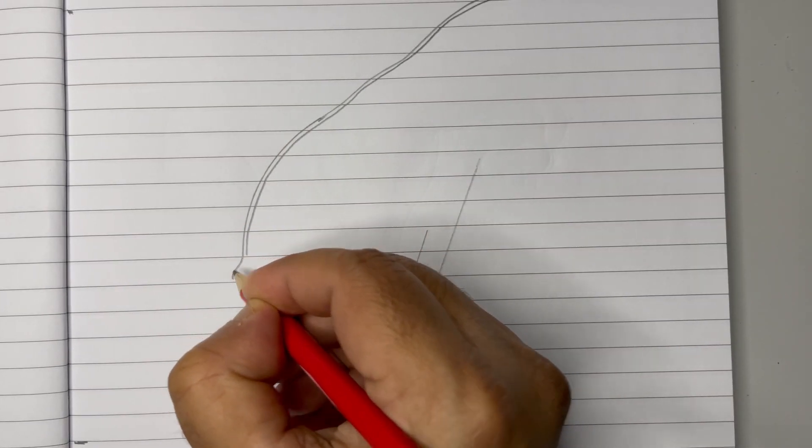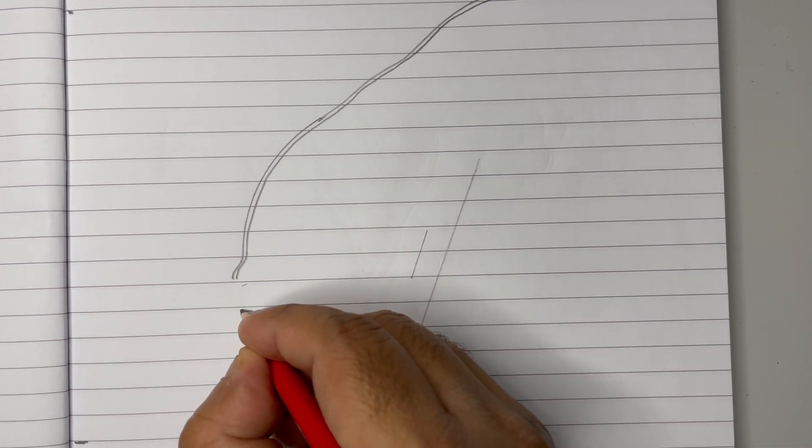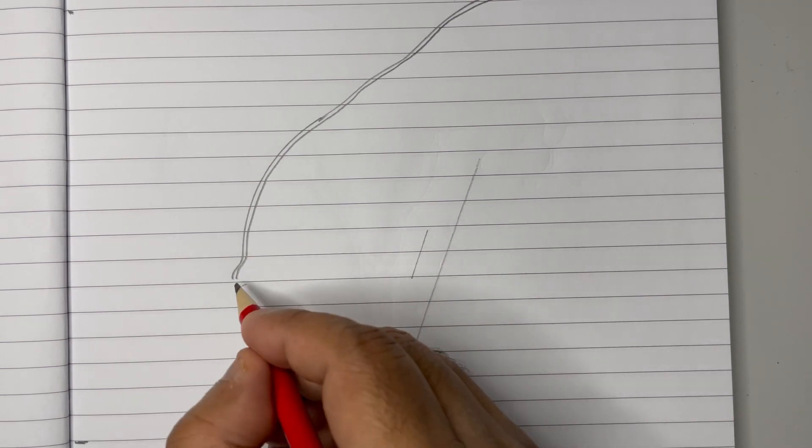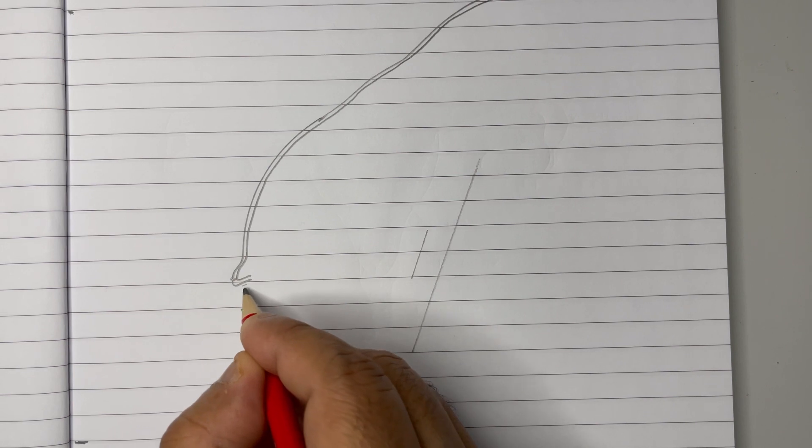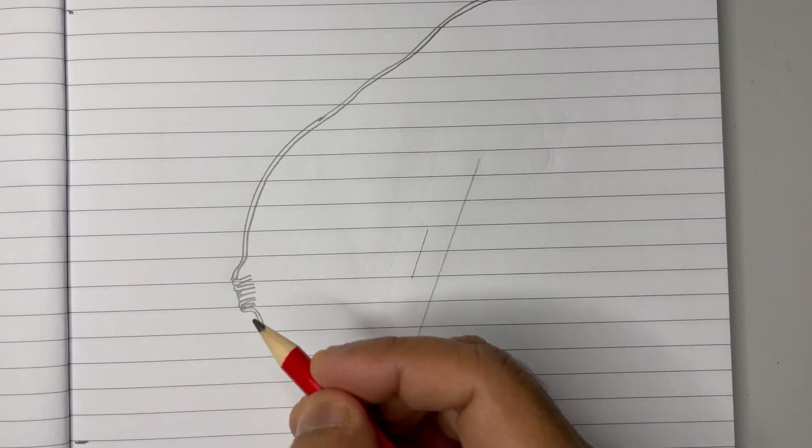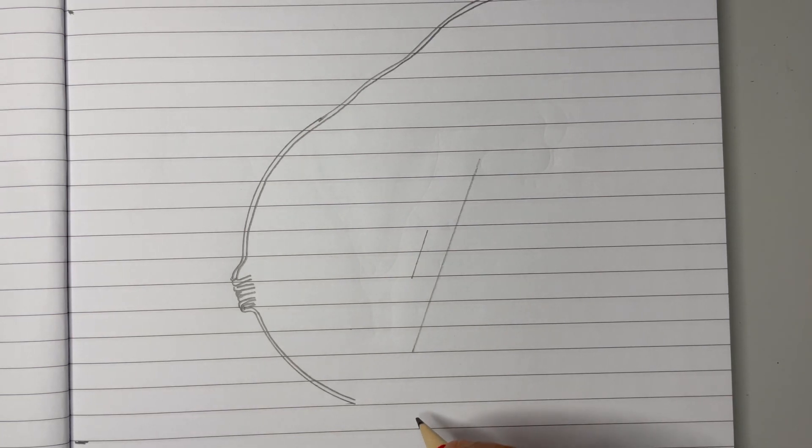We should go for the same here. Now we will bring that line like this, and the same way over here. After that, we are supposed to make the small ducts which are entering from here. Draw one duct like this, then another, and so on. This is basically the nipple.